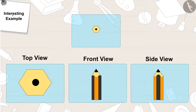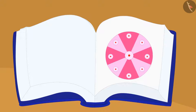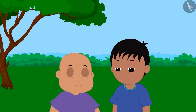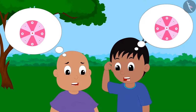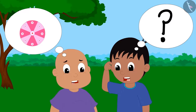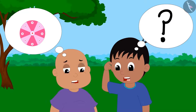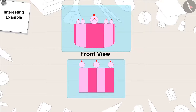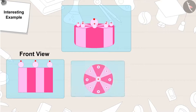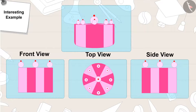Gagu then told Raju and Bablu, 'This is the next picture.' Gagu turned the page and asked, 'Can you help Raju and Bablu identify the object?' Raju and Bablu still couldn't identify the object. Gagu revealed: 'This is a cake. A cake looks like this from the front view. From above in the top view, it looks like this. And in the side view, it looks like this.'